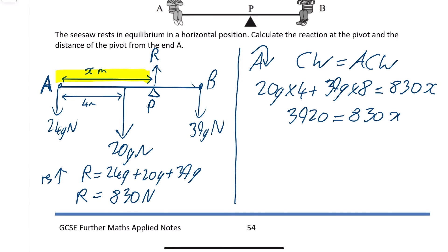So then divide that, 3920 divided by 830, and that gives me my X. So my X works out to be 4.72 meters, and that's to two decimal places.